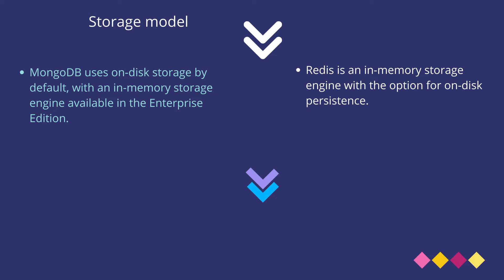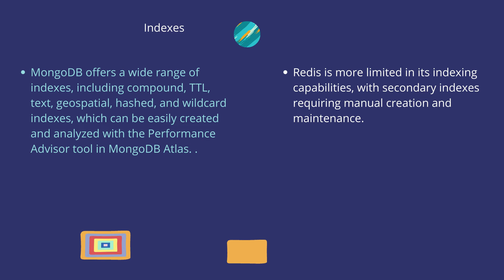Coming to the storage side, MongoDB uses on-disk storage by default with an in-memory storage engine available in the enterprise edition. However, Redis is an in-memory storage engine with the option for on-disk persistence. MongoDB offers a wide range of indexes including compound, TTL, text, geospatial, hash, and wildcard indexes, which can be easily created and analyzed with the Performance Advisor tool in MongoDB Atlas. On the other hand, Redis is more limited in its indexing capabilities, with secondary indexes requiring manual creation and maintenance in in-memory storage systems.